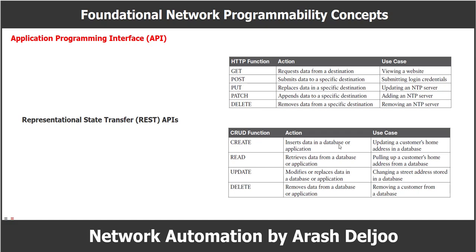The CRUD use cases include: Create — updating a customer's home address in a database; Read — pulling up a customer's home address from a database; Update — changing a street address stored in a database; and Delete — removing a customer from a database. We can use HTTP because it provides all of the CRUD functions. For RESTful APIs, we use HTTP verbs to perform all the functions we need: Create, Read, Update, and Delete.